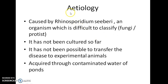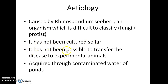Now let us see about the etiology of Rhinosporidiosis. Rhinosporidiosis is caused by Rhinosporidium seeberi, an organism which is difficult to classify. Some people consider it as a fungus and some people consider it as a protist. Rhinosporidium seeberi has not been cultured so far, so it has not been possible to transfer the disease to experimental animals.